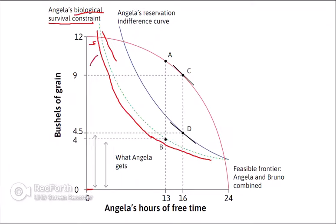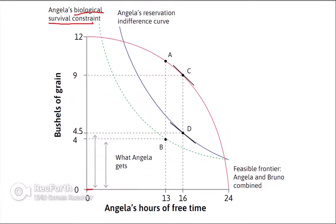The landlord cannot force Angela to work beyond this point. If she works inside the green line, she will die. So anything above the green line is technically feasible — she can produce all of that. The problem facing the landlord is that he wants to get the most out of his laborer.